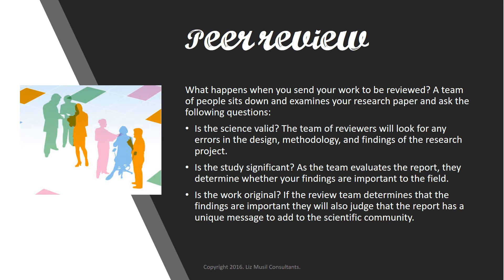What happens when you send your work to be reviewed? A team of people sit down and examine your research paper and ask the following questions. One, is the science valid? The team of reviewers will look for any errors in the design, methodology, and findings in the research project. Is the study significant? The team evaluates whether your findings are important to their field. Is the work original? If the review team determines that the findings are important, they will also judge that the report has a unique message to add to the scientific community. Based on the answers to these questions, the review team sends their recommendations to the editor of the scientific journal to publish your paper or to reject it. Note, however, that a rejection does not always mean that a paper is completely dismissed — sometimes reviewers will feel that a study is important but needs to be improved in certain areas.